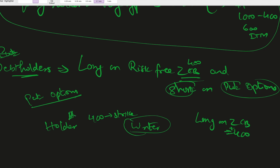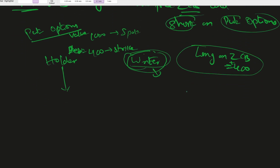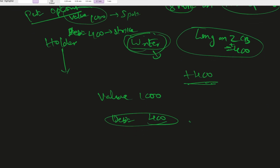The debt holder is short on put options, playing the writer's role. Strike price is 400 (the debt) and the spot price is 1000 (the value). For a put option, the holder wanted the price to go down but it has gone up, so the put is worthless for the holder. The writer has no payoff obligation, and from the zero coupon bond the debt holder gets 400 — net net, they receive 400.